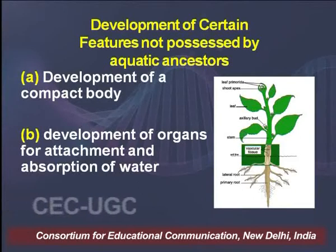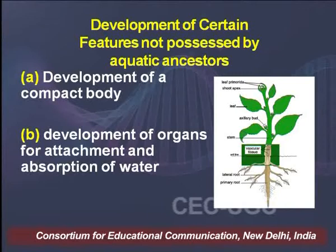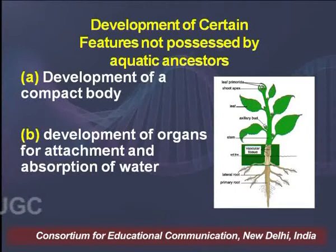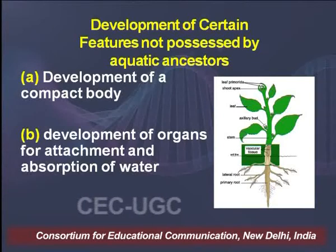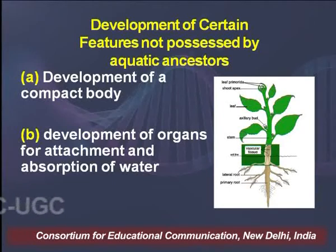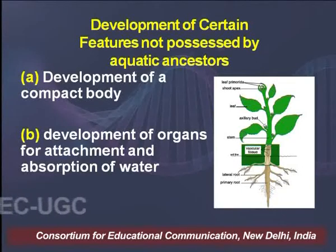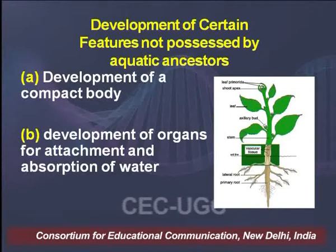Let us understand some features which these plants developed that were not possessed by their aquatic ancestors. One of the prominent differences was the development of a compact body. Plants can be categorized into shoot system and root system. Initially the root system was very poorly developed — also termed rhizoid — but these rhizoids gradually evolved into a proper root system, whereas the shoot system gradually differentiated into leaves, flowers, and branches.